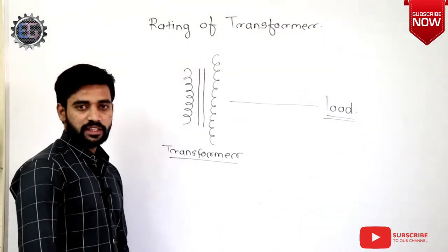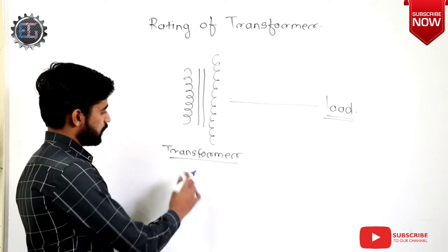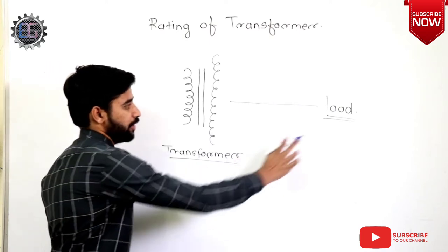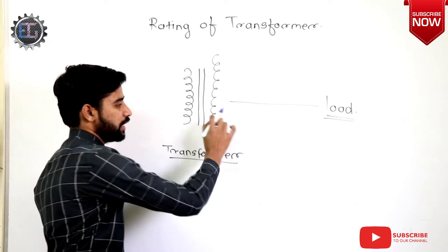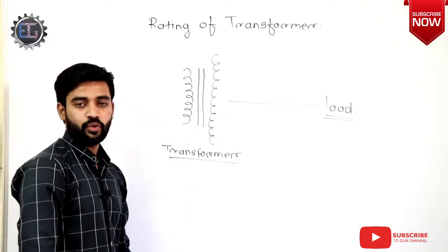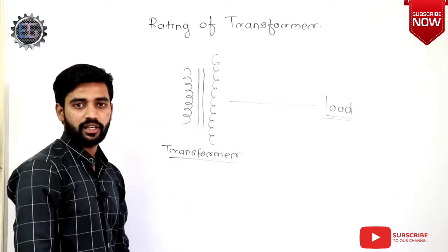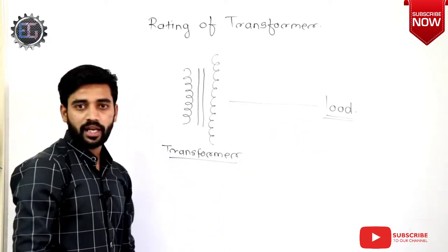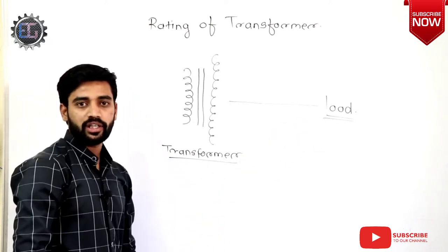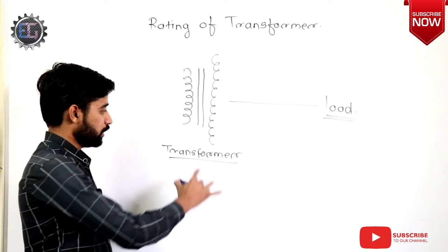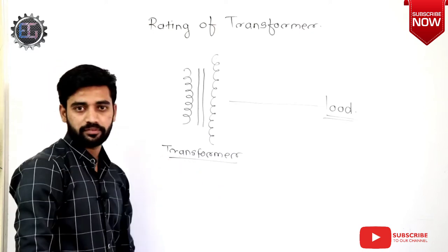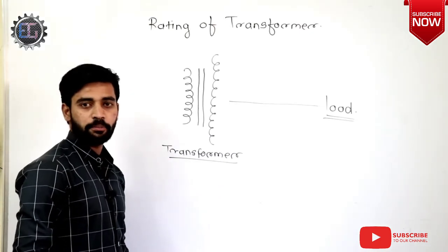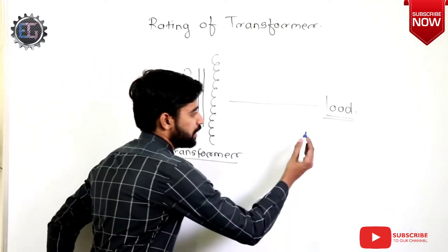To understand this concept, we have drawn a simple diagram in which we have a transformer and a load connected to it. The most uncertain and unpredictable thing in this power diagram is the load. No one can predict what kind of load is going to be connected to the transformer.